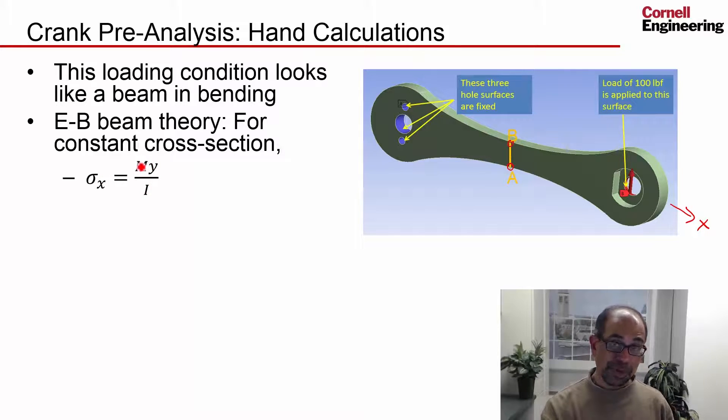M is the moment over there. It's going to be force times this distance along here. Y is going to be the distance from the neutral axis. So let's say if that's the point on the neutral axis, Y is going to be the distance from that to B or to A. And I is going to be the moment of inertia. So if I draw a cross section like that, it's going to be the moment of inertia of that cross section.